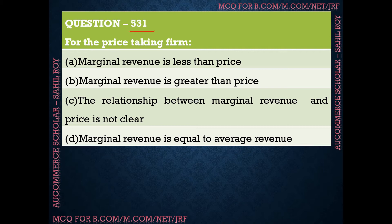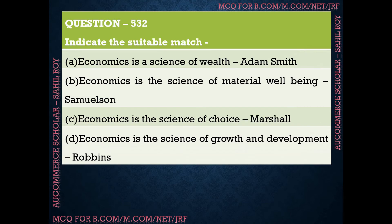Question number 531: For price-taking firms — options are: marginal revenue is less than price; marginal revenue is greater than price; the relationship between marginal revenue and price is not clear; or marginal revenue is equal to average revenue. The correct answer is option D — for a price-taking firm, marginal revenue is equal to average revenue.